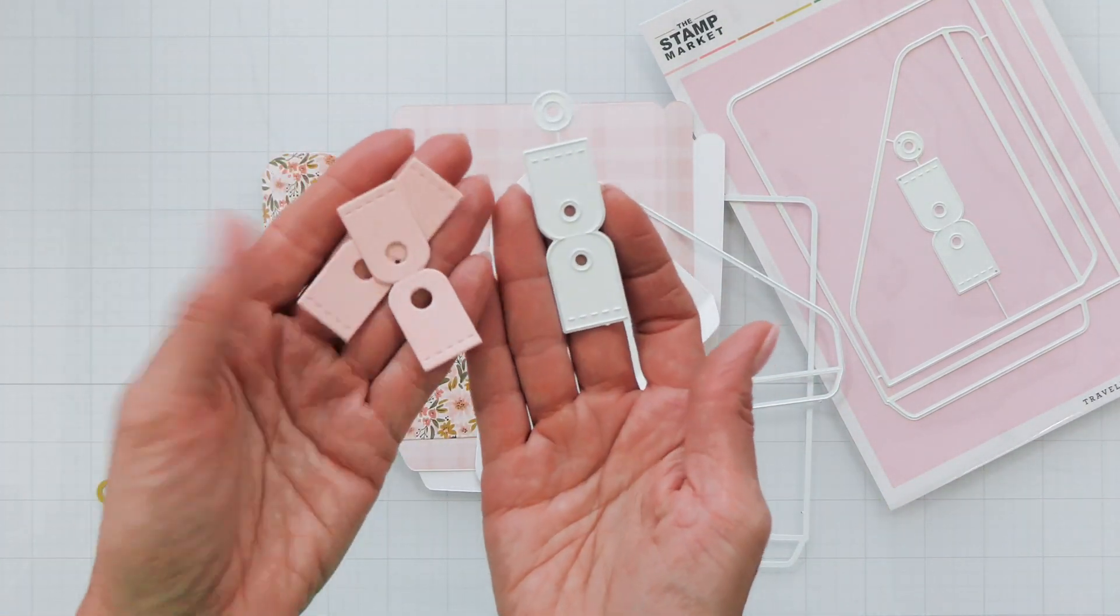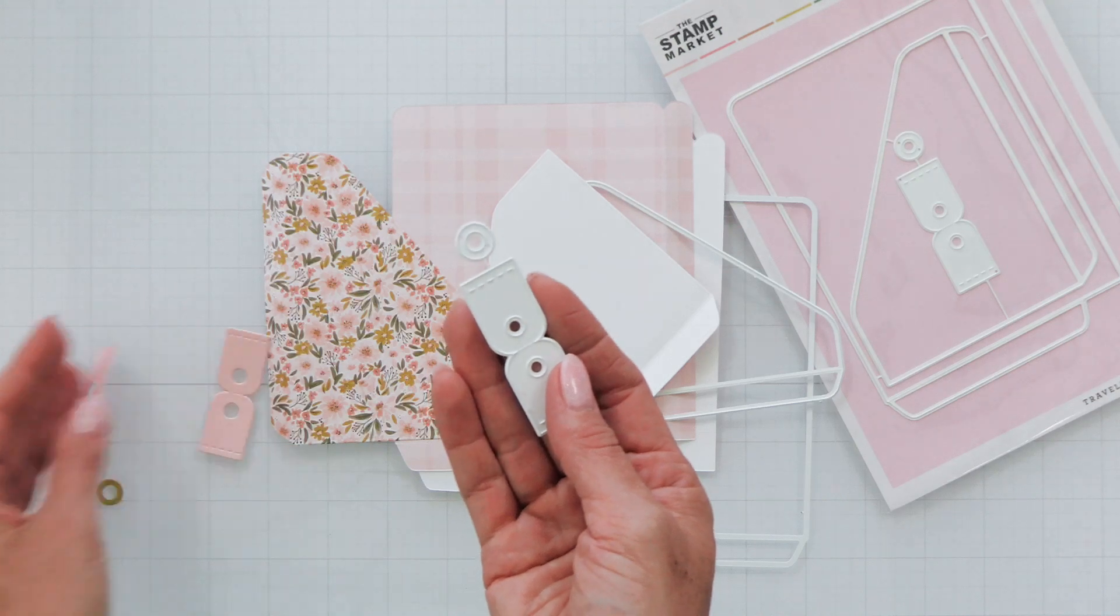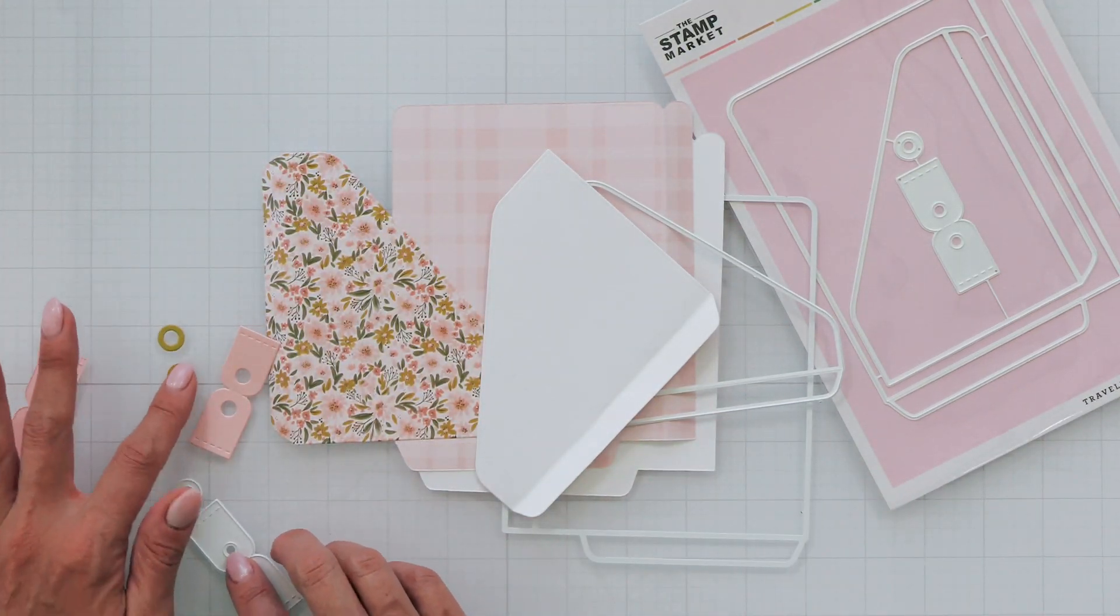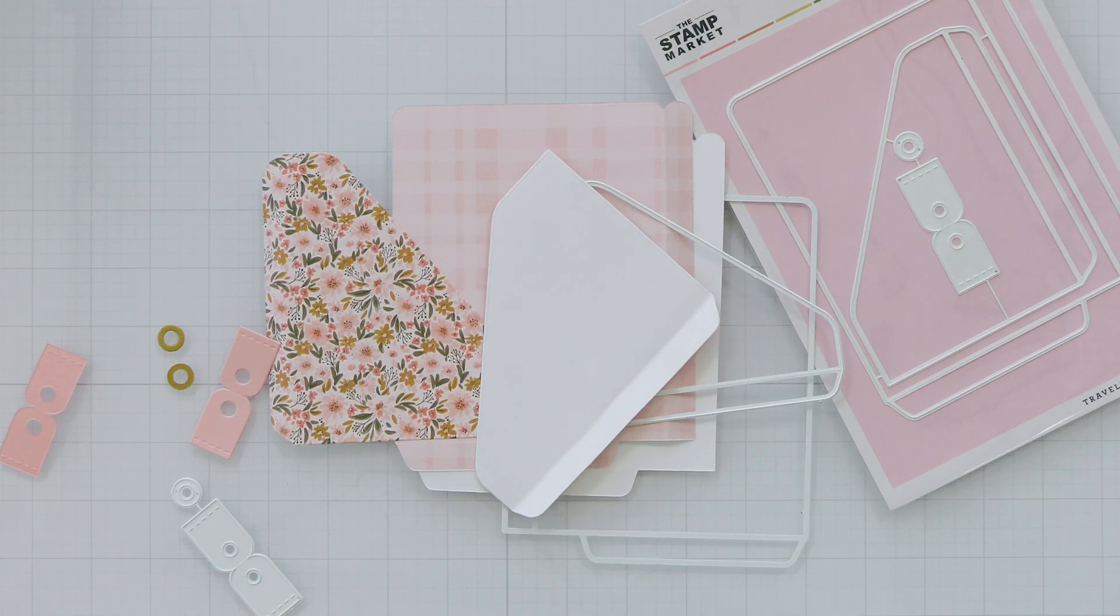The next piece is optional but you can cut two of the little closure and two of the little reinforcer for a little added color. This is just an optional feature if you want to close your mini book.